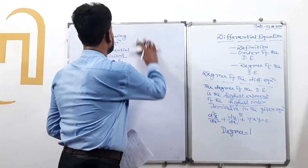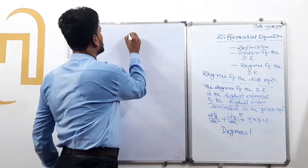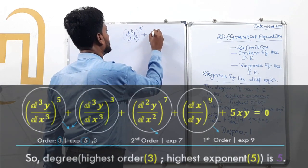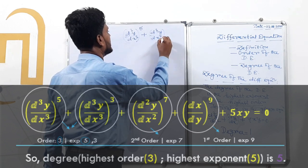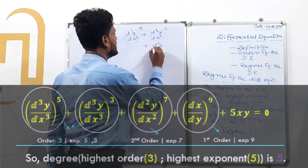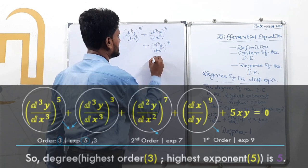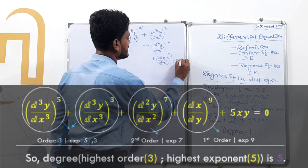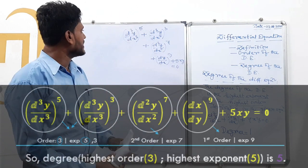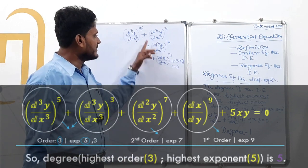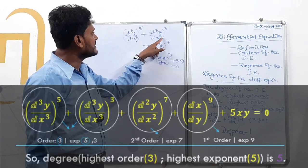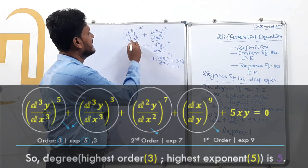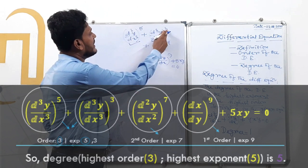Another example: (d³y/dx³)⁵ + (d³y/dx³)³ + (d²y/dx²)⁷ + (dy/dx)⁹ + 5xy = 0. The derivatives present are first order, second order, and third order. The highest order derivative is third order (d³y/dx³), which appears with exponents 5 and 3. The highest exponent of the highest order derivative is 5, so the degree equals 5.